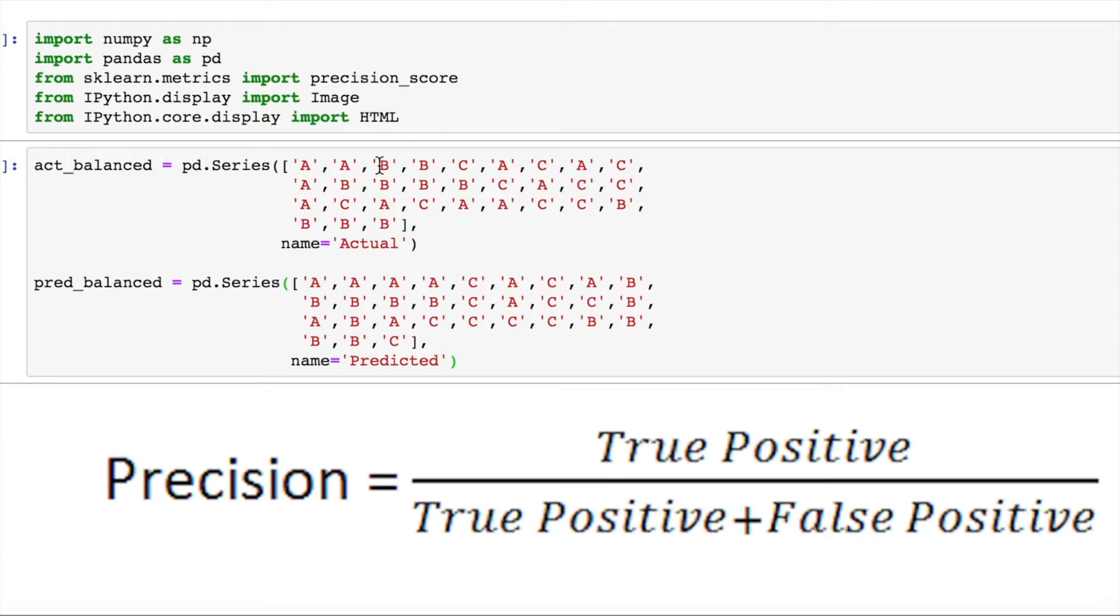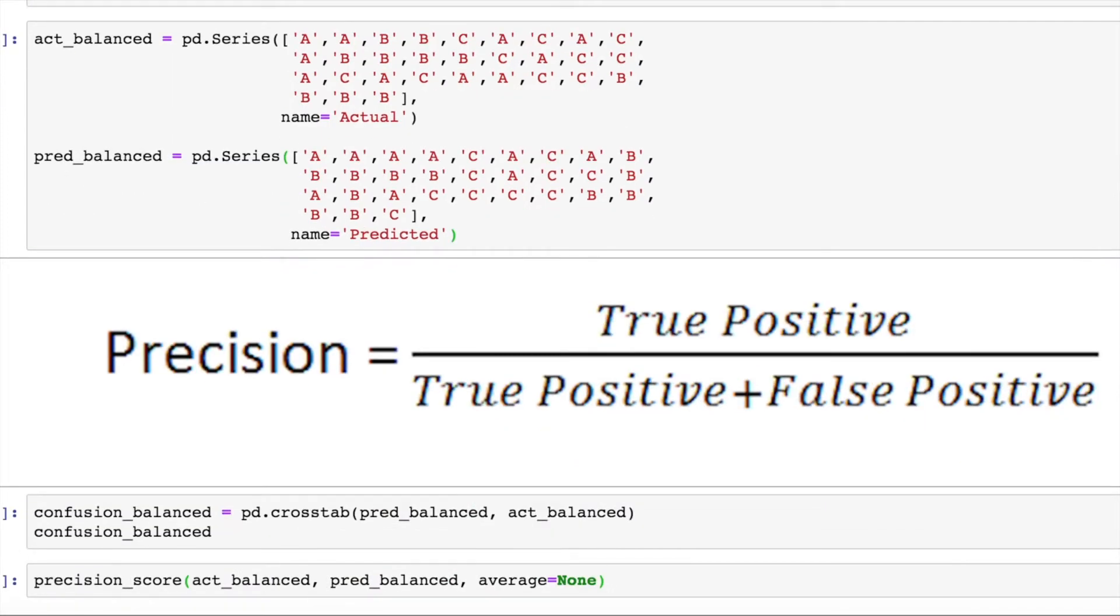As you all know, precision is basically the ratio of true positives upon the sum of true positives plus false positives.